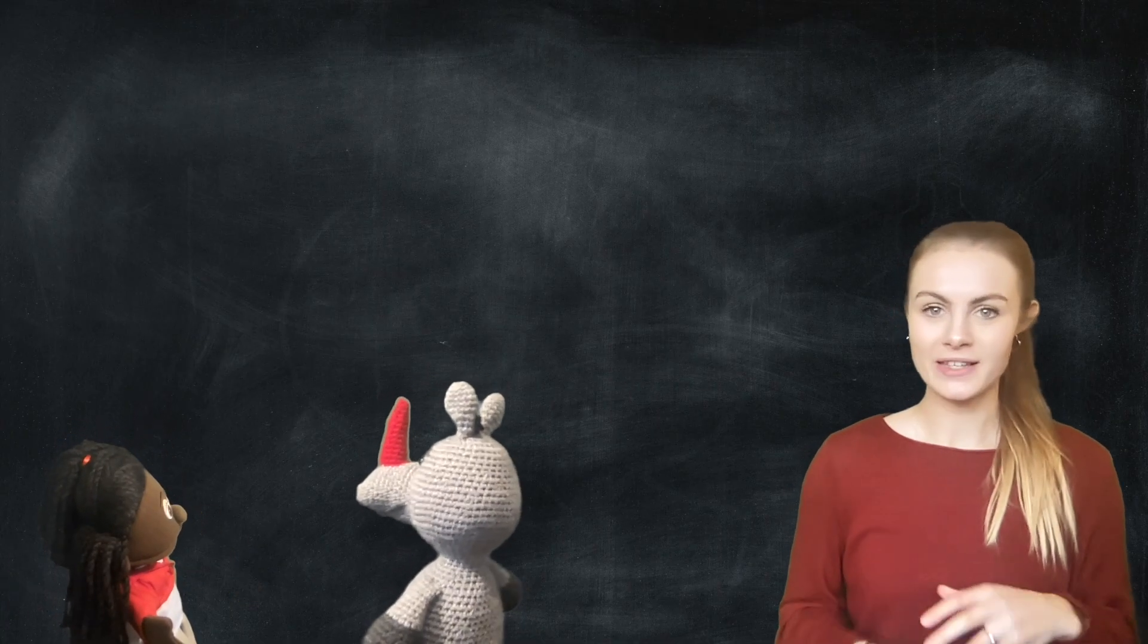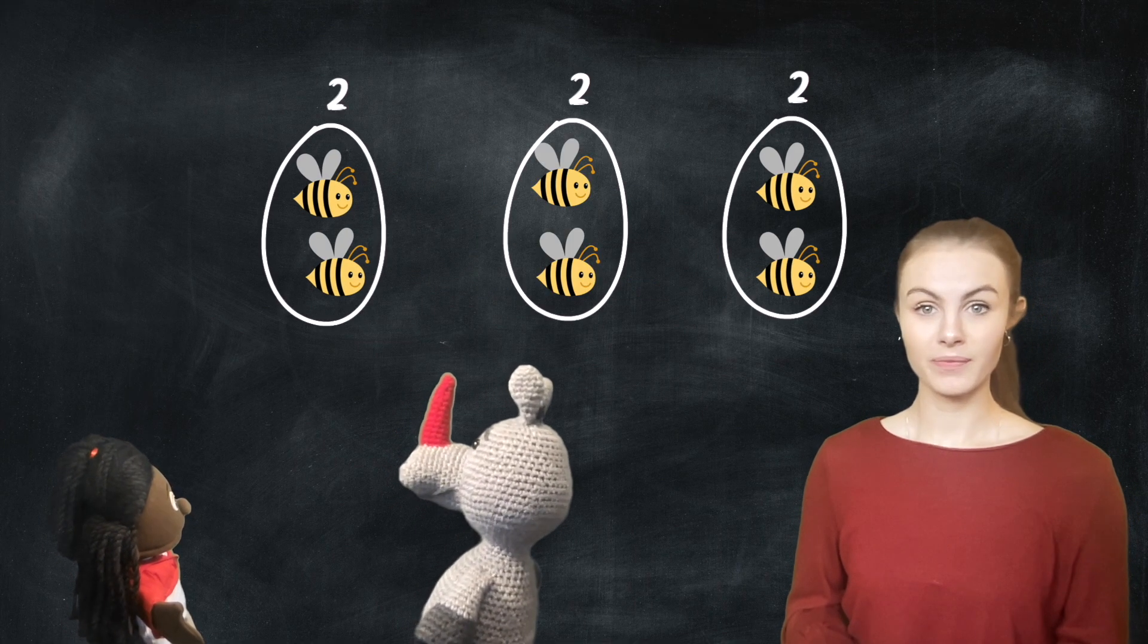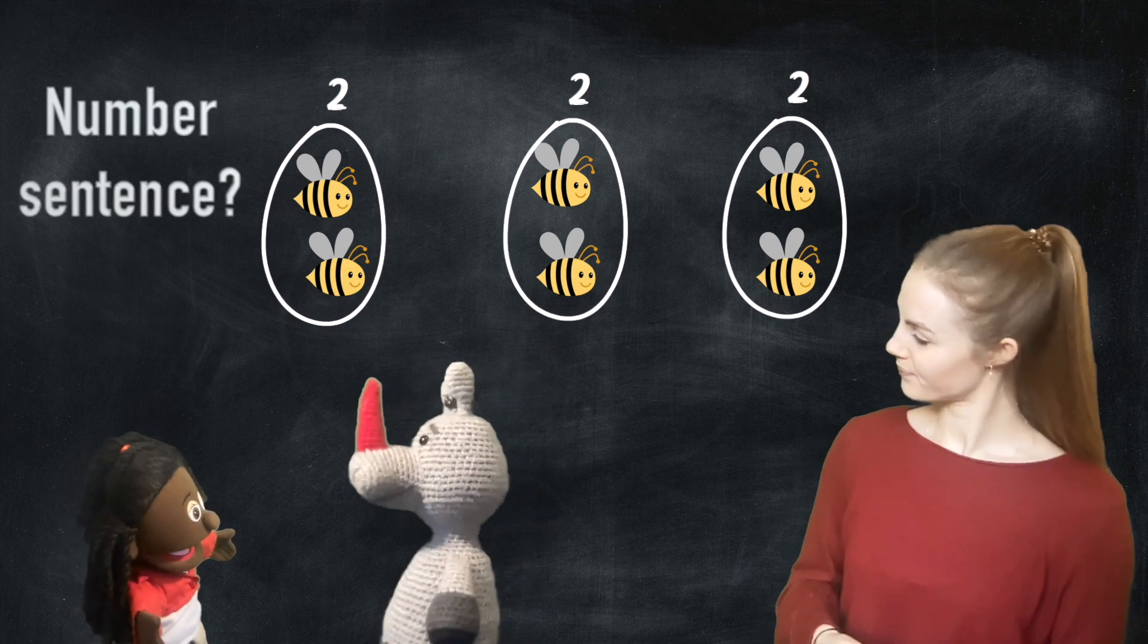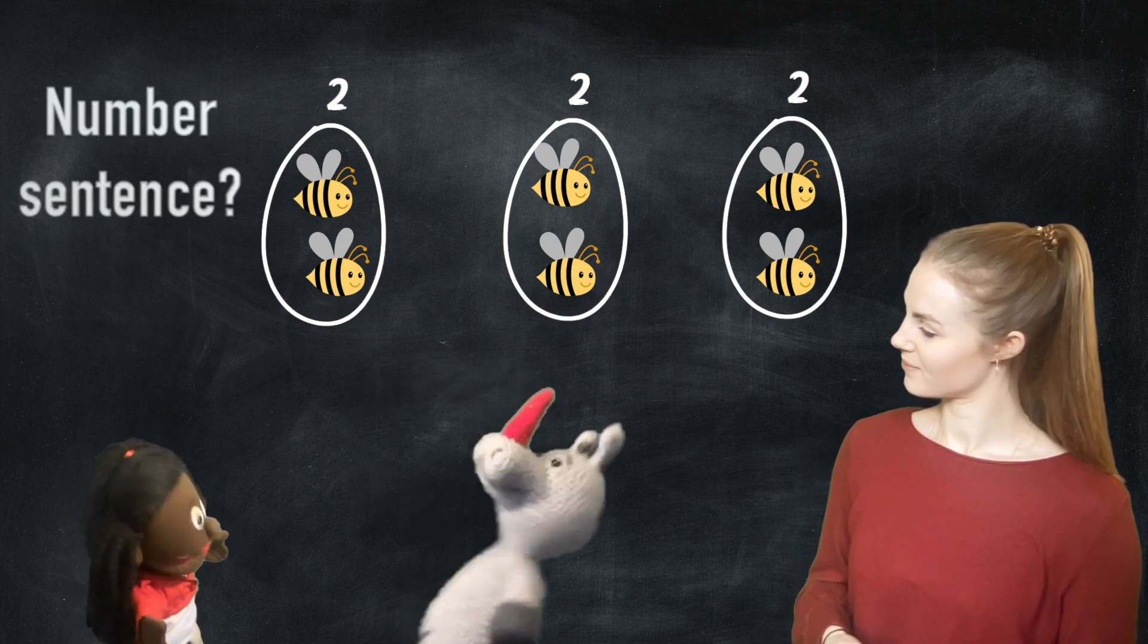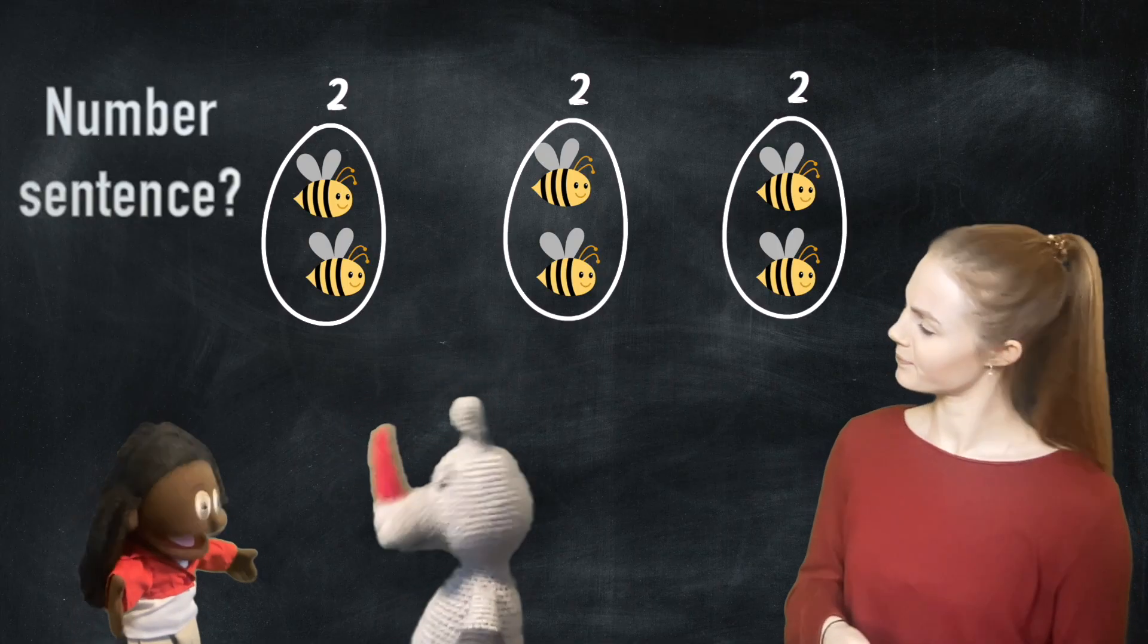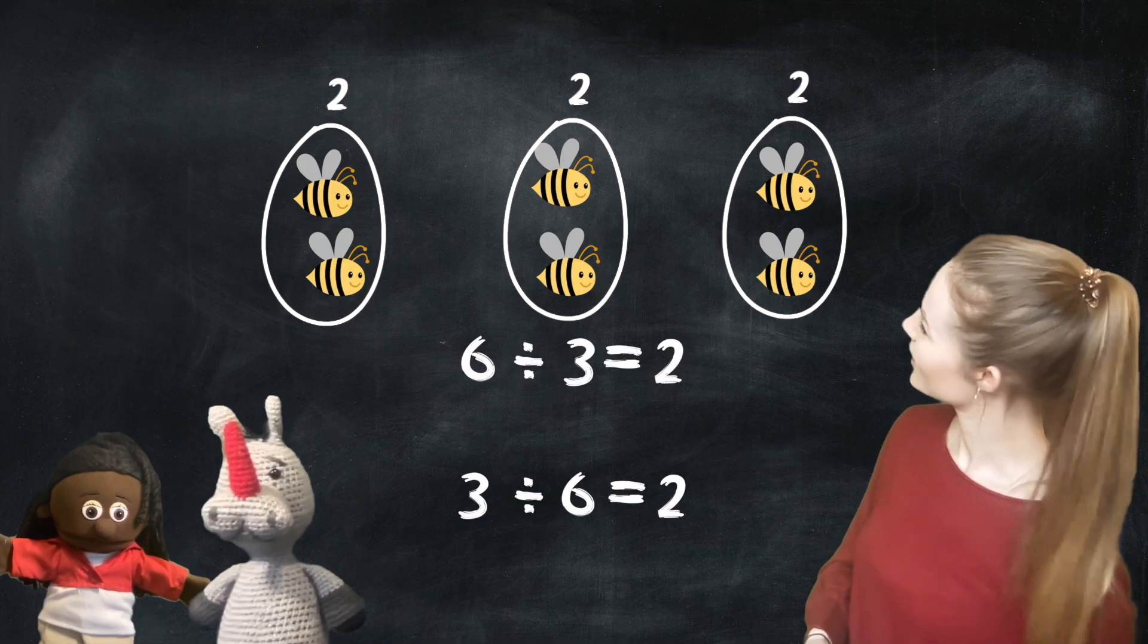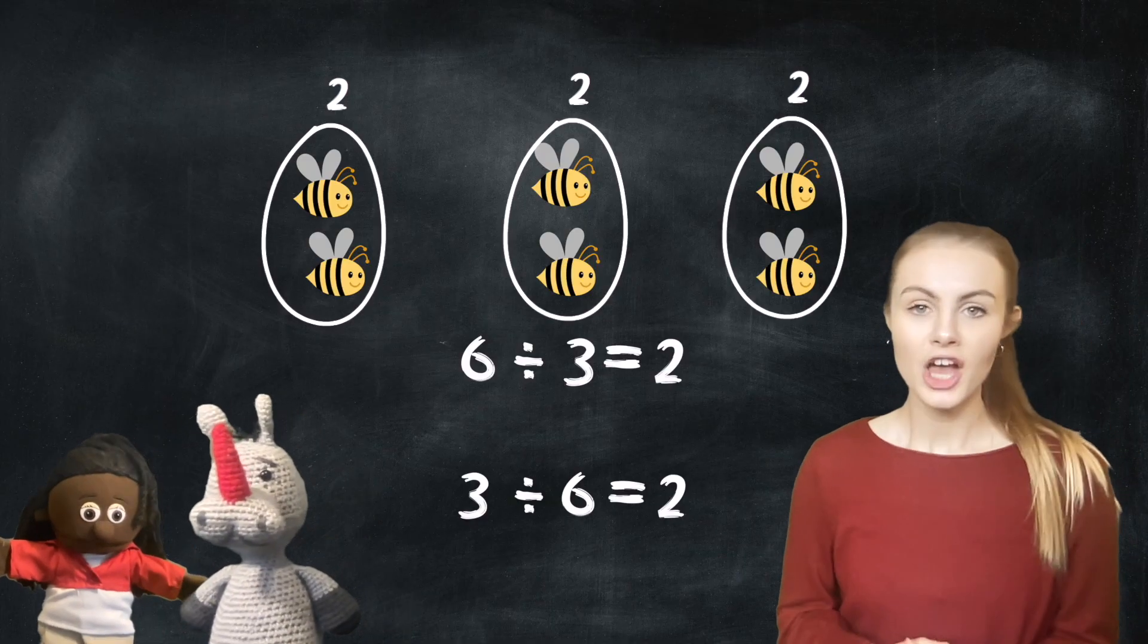We've got a picture here of 6 bees. I'm going to share these 6 bees between 3 equal groups. We can now see we've got 2 in each group. How do I write this as a number sentence? I don't think they're agreeing. Ready? Interesting.